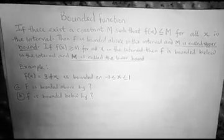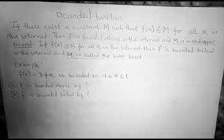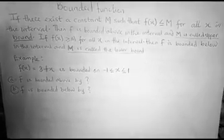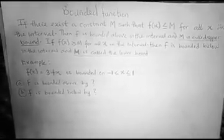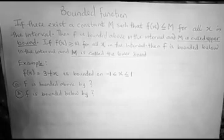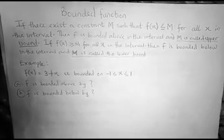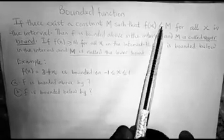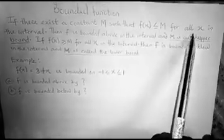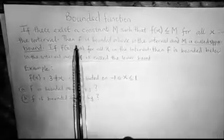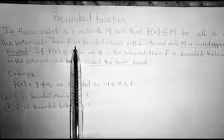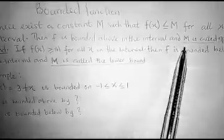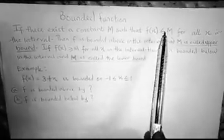Today we're talking about bounded sets. When is a function said to be bounded? A function is said to be bounded if there exists a constant M such that f(x) is less than M for all x in the interval, then f is said to be bounded above, and M is called the upper bound.